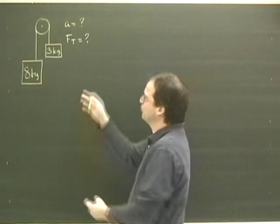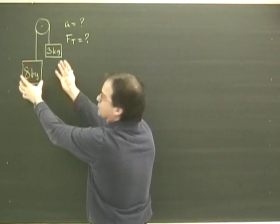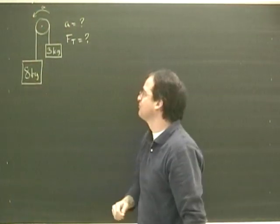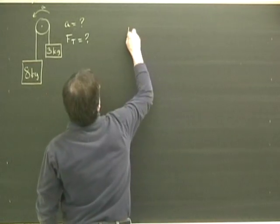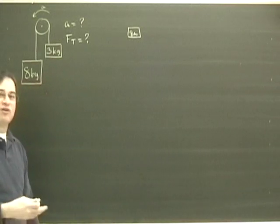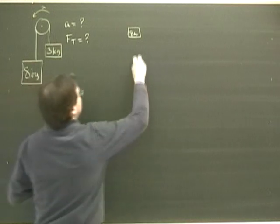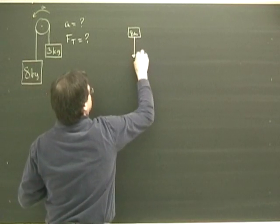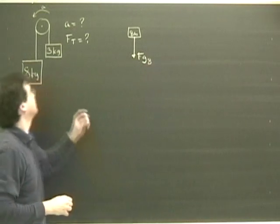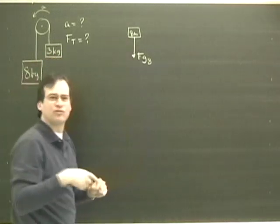First thing we need to decide is which way is this system going to move and it just would make sense that this is going to go down and this is going to go up. So I'm going to assume it's going to be accelerating that way. Let's draw the free body diagram for the 8 kilograms. Here's the 8 kilograms and you've looked at the video on free body diagrams and you know there are four or five questions you've got to ask. The first one is, is there gravity? Yes, there's gravity. And I'm going to put a little subscript here, 8, just to remind us that it's not the same force of gravity that's on this one.